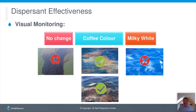Once spraying operations are underway, monitoring should be carried out to validate that the operation is working. Through visual observations: if there is no change to the appearance of the oil, underdosing is occurring or the dispersion is not working. If a milky white plume appears in the water column, overdosing is occurring or the dispersant is missing the target. What we hope to see is the oil turn a coffee colour and start leaving the surface and dispersing into the water column, either immediately or within a few minutes for thicker oil.